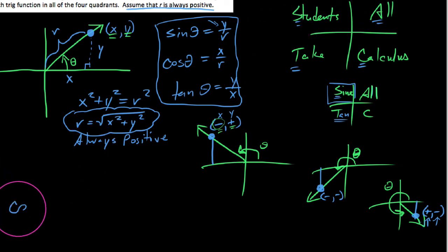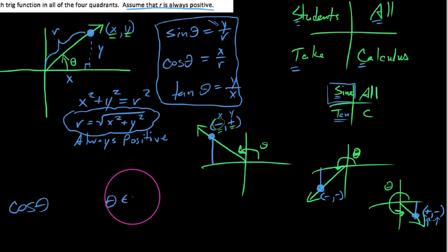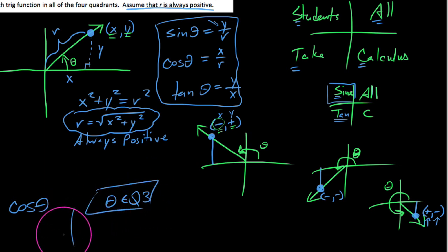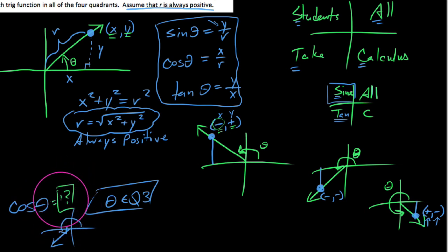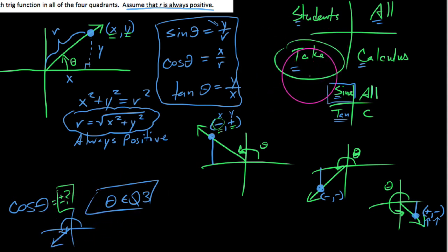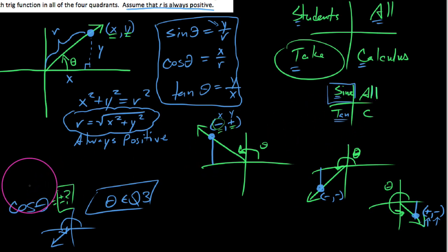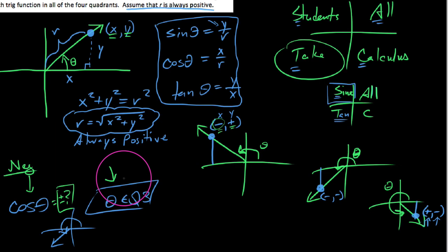So 'All Students Take Calculus' is just an easy way to determine whether your trig function values would be positive or negative. For instance, if I said find the cosine of angle theta, where theta terminates in quadrant III — I just look at my mnemonic: 'T' for the third quadrant means tangent is the only positive thing. So cosine would be negative if the angle terminates in the third quadrant.